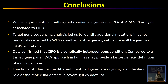In conclusion, whole-exon sequencing analysis identified pathogenic variants in genes such as B3GAT2 and SMC3 not yet associated to CIPO. Targeted gene sequencing analysis led us to identify additional mutations in genes previously detected by whole-exon sequencing as well as in other genes, with an overall mutation frequency of 14.4%. Data confirmed that chronic intestinal pseudoobstruction is a genetically heterogeneous condition, and compared to a targeted gene panel, whole-exon sequencing in families may provide better genetic definition of individual cases. Functional studies for the different identified genes are ongoing to understand the role of the molecular defects in severe gut dysmotility.